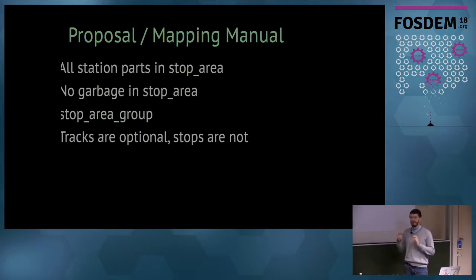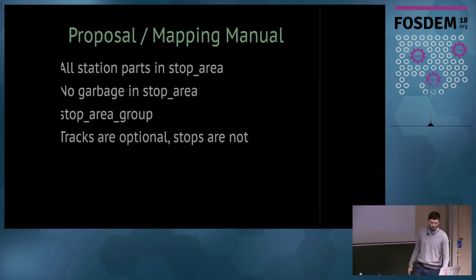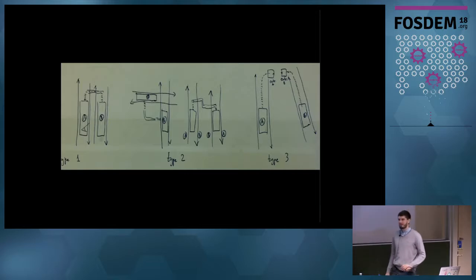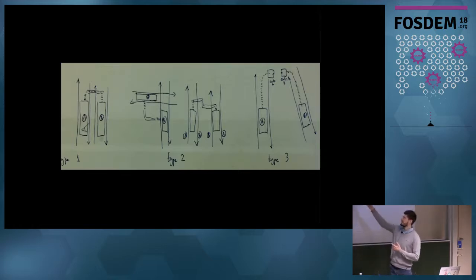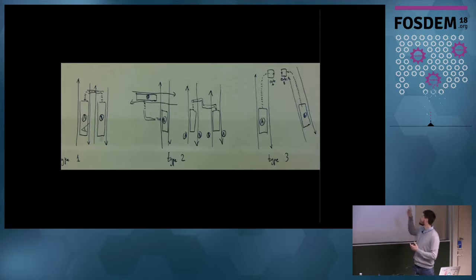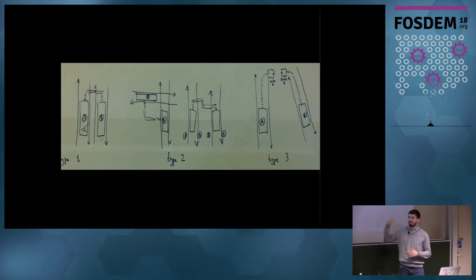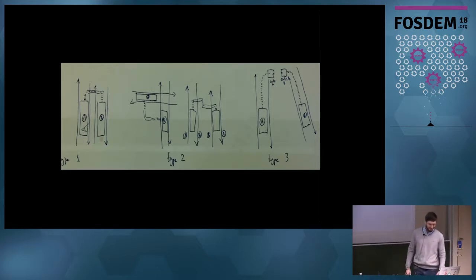I learned a lot from the discussion and was constantly changing the proposal. For example, I learned that there are three types of interchanges, not one: first, when you just exit the train and wait for the next train on a different line; second, when you have to go through a tunnel to change platforms; or third, when you have to leave one station, go to the surface, and enter another. These and the previous pictures are all from the proposal — I tried to make it as simple as possible.